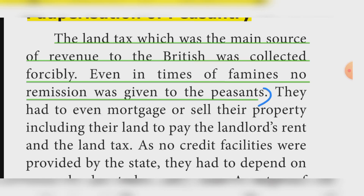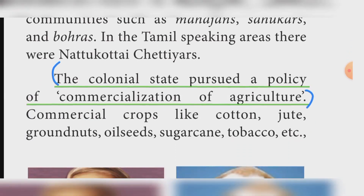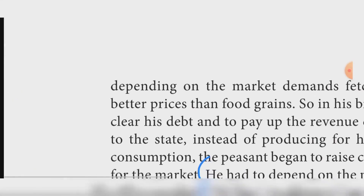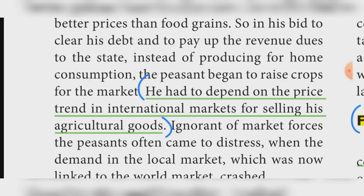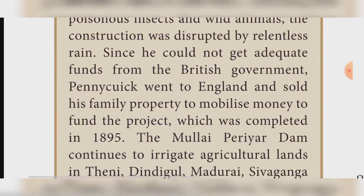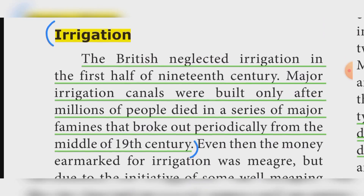The peasantry had to depend on price trends in international markets for selling agricultural goods. On the topic of irrigation: Major irrigation canals were built only after millions of people died in a series of major famines that broke out periodically from the middle of the 19th century.